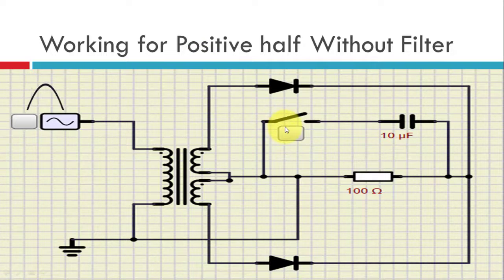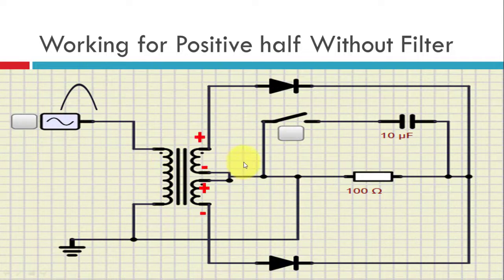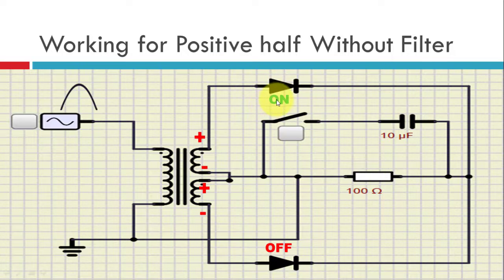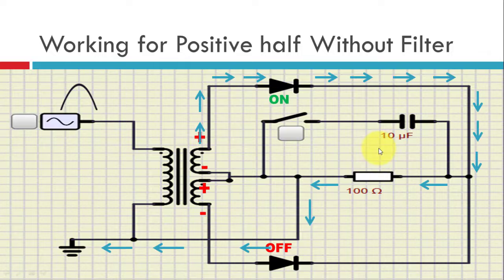During the positive half of the AC, this input is applied to the primary of the transformer. Because there are two secondaries, the output voltage at the secondary is spread such that we get positive, negative, positive, negative. Because of this, the upper diode is in the on state as it is in forward bias mode, and the lower diode goes into reverse bias mode.